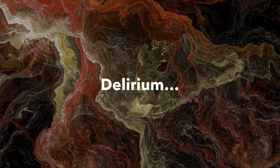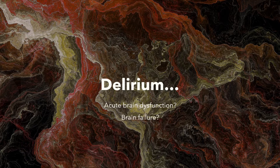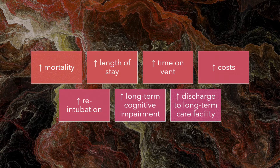Delirium. What is it? It's defined as an acute disturbance of consciousness that fluctuates over time. Patients generally can't receive, process, store or recall information in the same way. It's usually reversible. But remember, if your patient is delirious, it's serious. Delirium lengthens intensive care stays, it worsens long-term cognitive impairment and ultimately increases mortality.